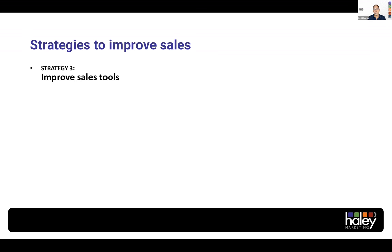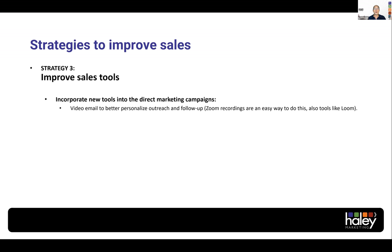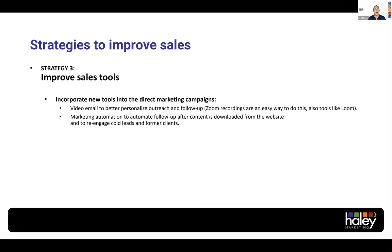Strategy number three: give your sales team even better tools to sell. In your direct marketing and sales outreach, start using things like video email. Your salespeople can use recordings that they send out to introduce themselves, introduce your company, introduce the value that you can provide. Tools like Loom make it very easy to create videos — it's a game changer in that first contact and also in the follow-up. You can use marketing automation. If you're not using Sense, Bullhorn Automation, HubSpot, or ActiveCampaign, you want to be able to send automated follow-up to people who have visited your website, downloaded content, or are in your ATS, and trigger the next step of logical communication when status changes.